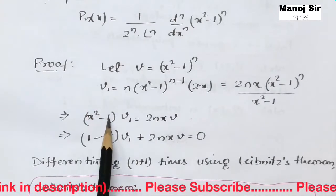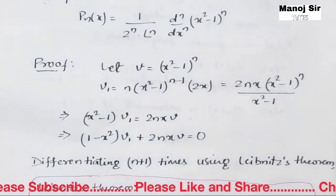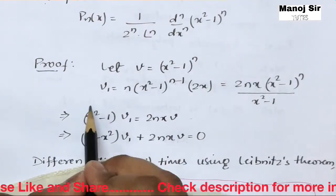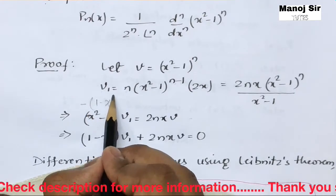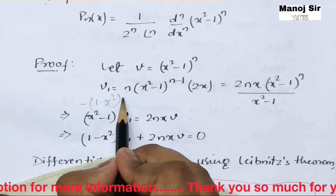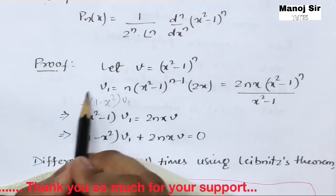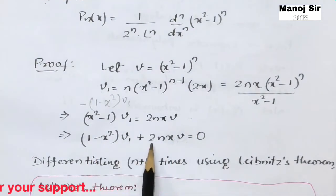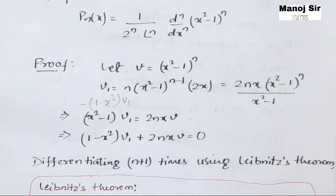Taking this to the left-hand side gives (x²−1)·V₁ = 2nxV. Taking negative common from the left side gives (1−x²)·V₁ + 2nxV = 0.